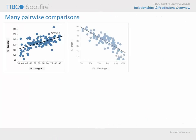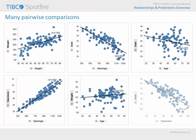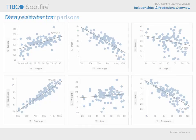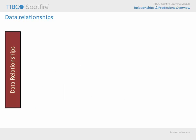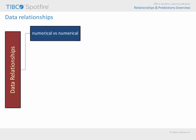In addition to using lines to evaluate potential relationships between data columns, there is a tool which is designed specifically to examine a large number of pairwise relationship comparisons between columns of data in our data table. The data relationships tool can compare columns using a variety of algorithms. You may compare numerical columns to determine if they are related, or numerical versus categorical columns in order to evaluate differences between groups of values.